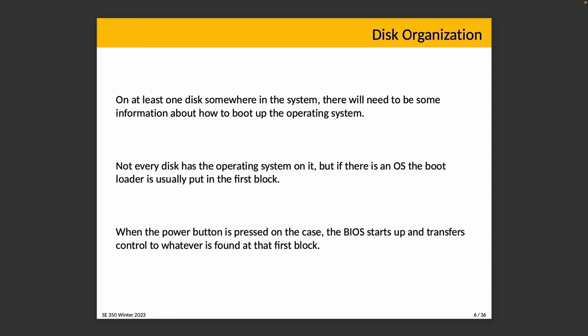On at least one disk somewhere in your system there is some information about booting up the operating system — sometimes called the boot sector. In a system with more than one disk, the operating system is probably only on one of them, so the first block of a disk is typically the loader information to start the OS. When the power button is pressed, the BIOS or firmware starts up and transfers control to whatever is found at the first block on the designated boot drive.